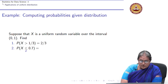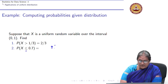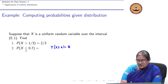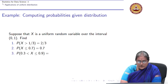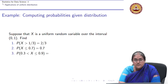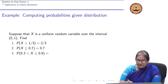Probability X is less than or equal to 0.7 is trivial — it is simply 0.7.